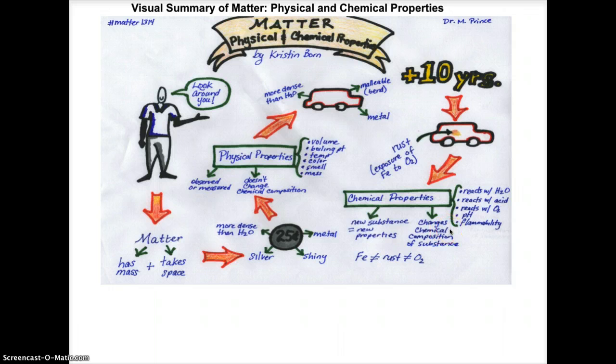Now, changes, chemical properties are pretty much the changes that can affect the chemical composition of a substance. It hasn't already undergone that, but we know it has the potential to. So other chemical properties are that some substances can react with water. Some can react with acid, react with oxygen. You can look at the pH and, again, flammability. All of these are chemical properties.